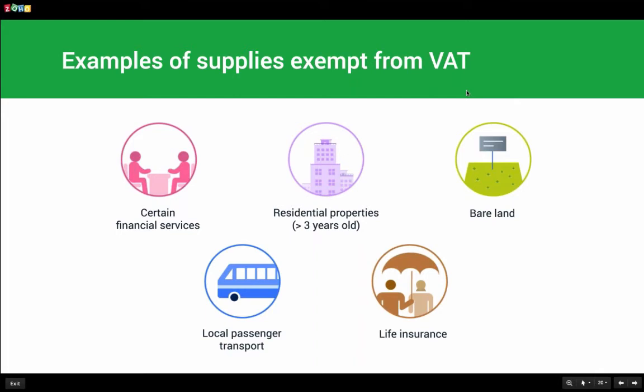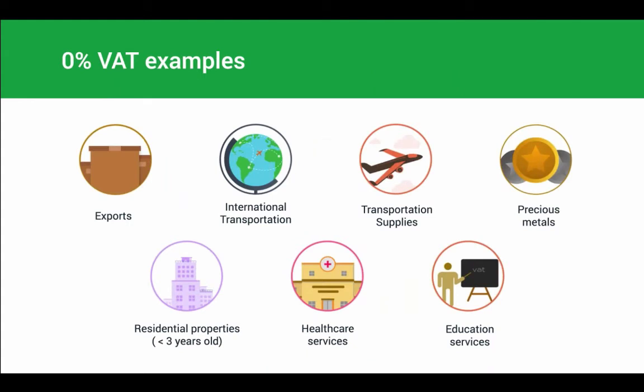Examples of exempt supplies include certain financial services mentioned within the VAT law, residential properties older than three years from the date of construction, sale of bare land, local passenger transport, and life insurance. Examples of zero-rated supplies include exports of any item or service, international transportation, supplies to certain transport vehicles such as aircraft or ships, investment grade precious metals, and newly constructed houses sold within three years of construction — meaning you can still claim ITC on materials bought for construction.